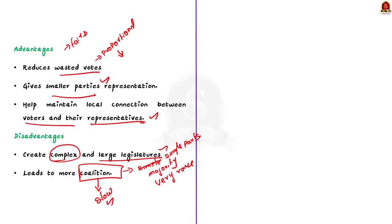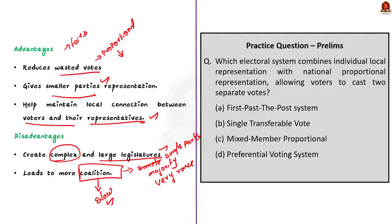To sum it up, the main aim of the mixed member proportional representation system is to provide a more accurate reflection of voter preferences while maintaining some elements of direct local representation. It is a mixture of both the first-past-the-post system and the proportional representation system. That's all regarding this discussion — we saw what the system is and some of its pros and cons. Let us now take up the next news article.